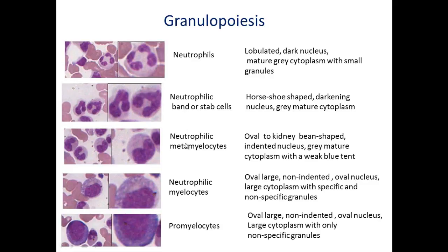At a less mature state, the metamyelocyte has either an oval or kidney-shaped nucleus that is somewhat indented, and the cytoplasm is already largely mature at this stage. Going to a younger cell type, the neutrophilic myelocyte has an oval, less condensed nucleus, a larger cytoplasm with basically three colors — pink, blue, and gray — indicating both specific and nonspecific granules. The final form is the promyelocyte, with an oval nucleus and cytoplasm containing just a little bit of pink.